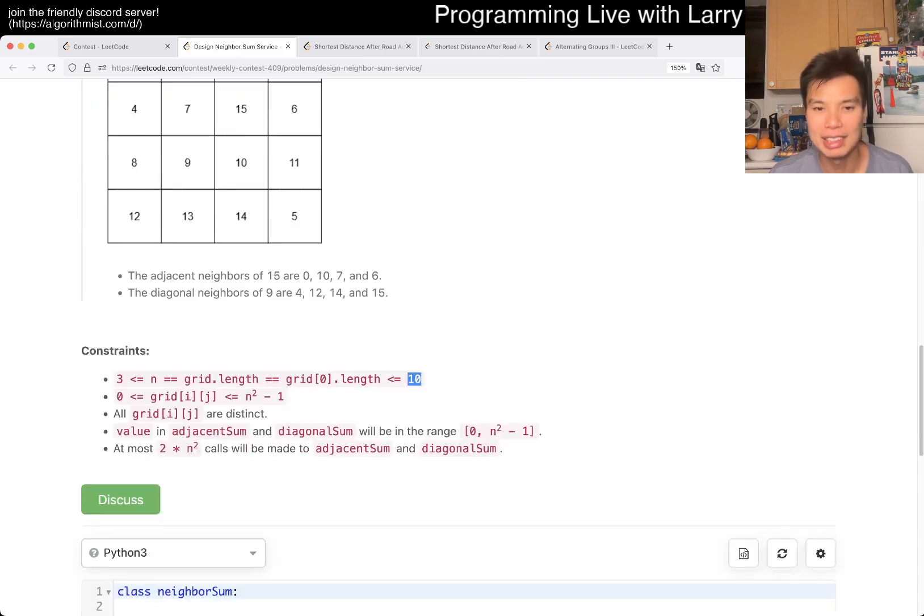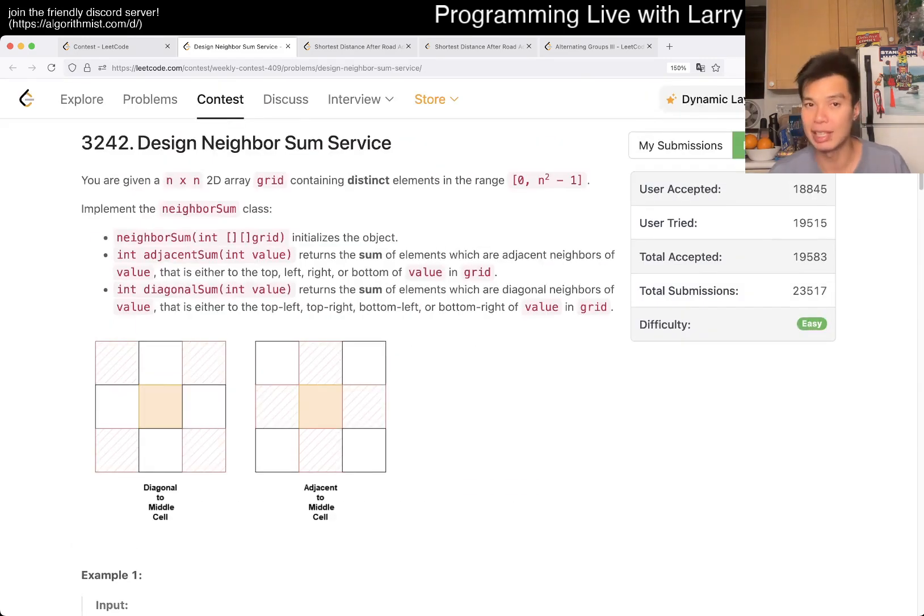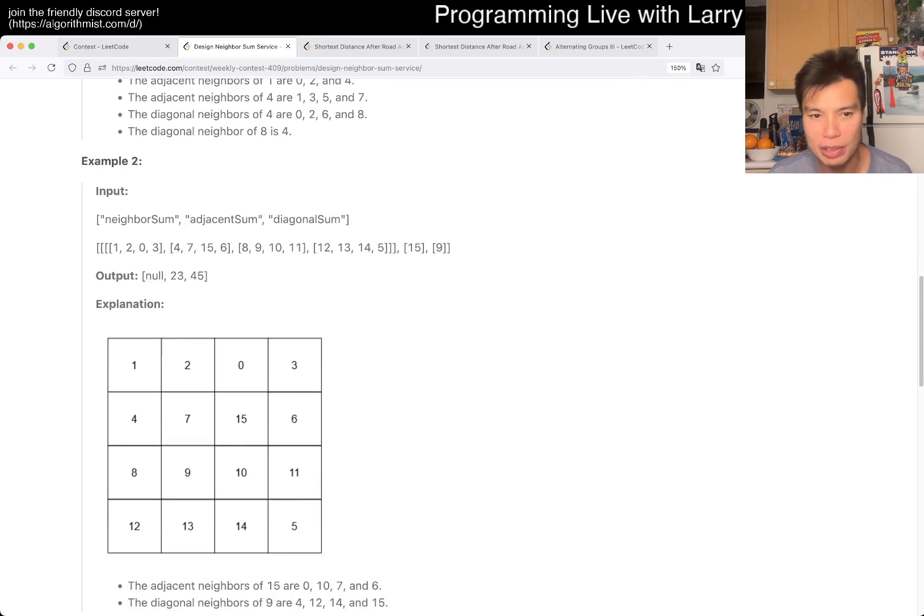But keeping in mind that this is also just 10 by 10, so you don't really have to be that much. But do challenge yourself a little bit, especially now that the contest is over, to make it a little bit more flexible. But yeah, you can just do it with a lookup table. And then after that, it's just about implementing the sum of adjacent elements or a diagonal. So we'll go over the code now.